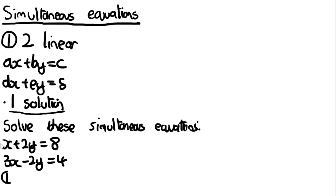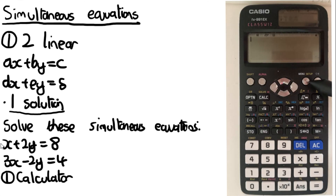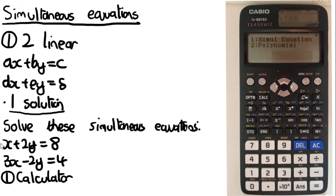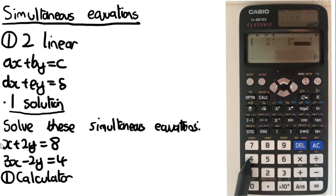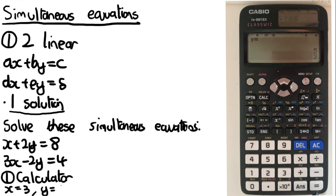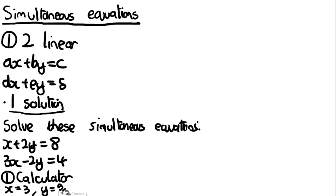The first way to solve these is by using the calculator. Press menu/setup, go to the equation/func option and press 1 for simultaneous equation, then 2 for two unknowns. Enter the coefficients: 1, 2, 8, 3, −2, and 4, then press equals. It gives you x = 3 and y = 5/2 — that's the solution.